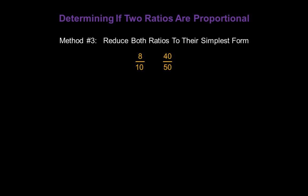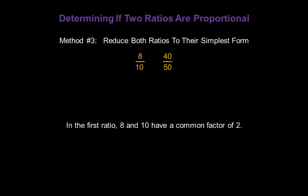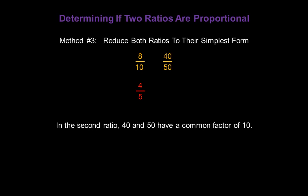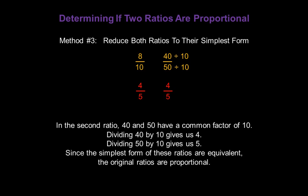Method number 3: we can reduce both ratios to their simplest form. If both ratios reduce to the same fraction, then our original ratios are proportional. In the first ratio, 8 and 10 have a common factor of 2. Dividing 8 by 2 gives us 4 in the numerator, and dividing 10 by 2 gives us 5 in the denominator. In the second ratio, 40 and 50 have a common factor of 10. Dividing 40 by 10 gives us 4, and dividing 50 by 10 gives us 5. The simplest forms are equivalent, so the original ratios are proportional.